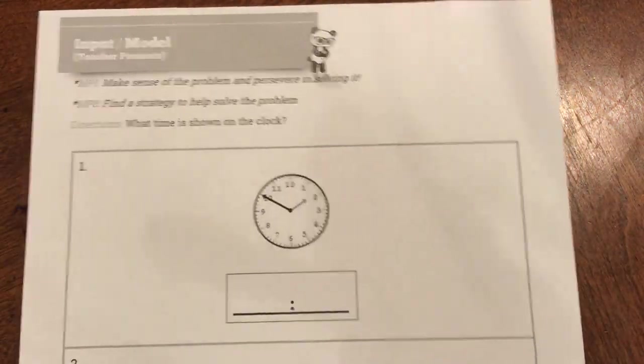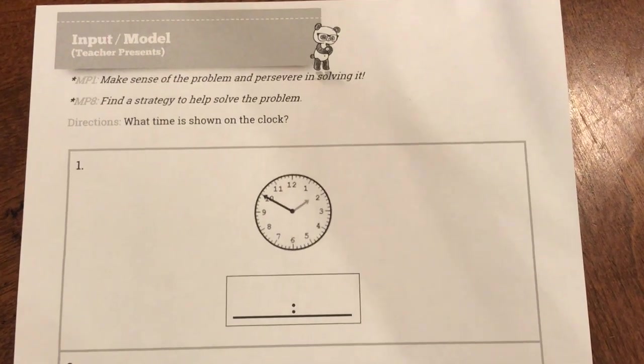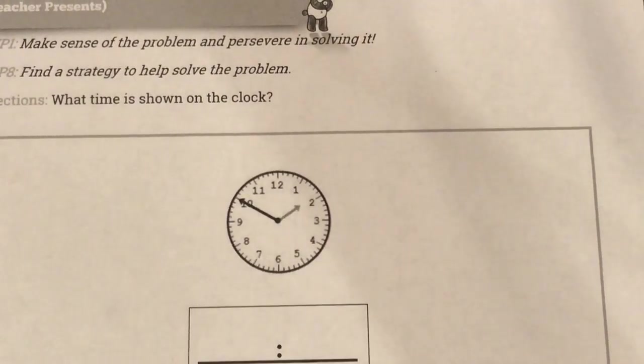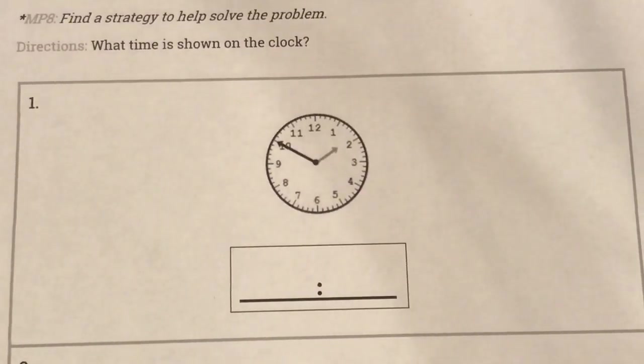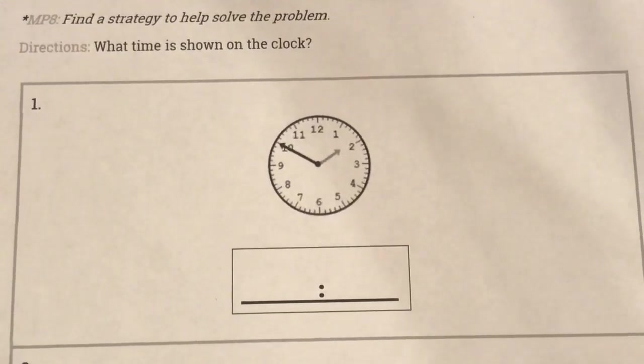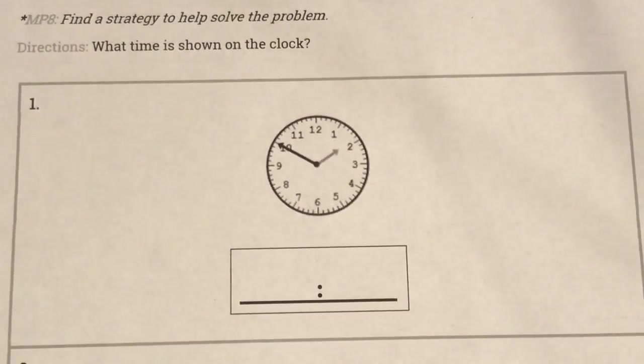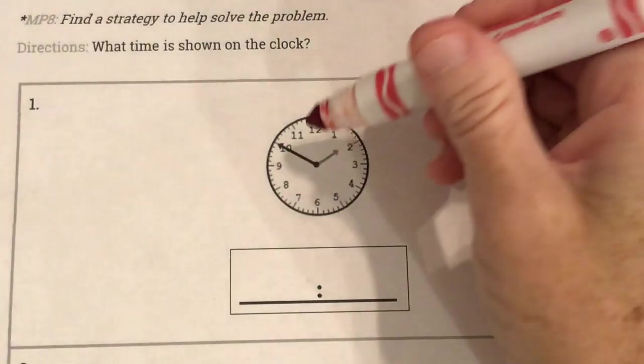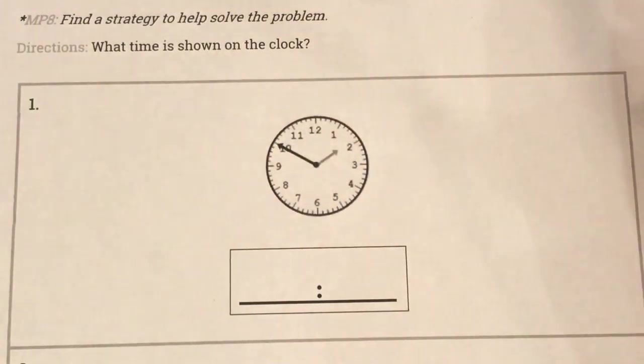Okay so here is my first problem. My first problem looks like this. So notice they gave me an analog clock or a face clock. And when I look at it I see the two hands.